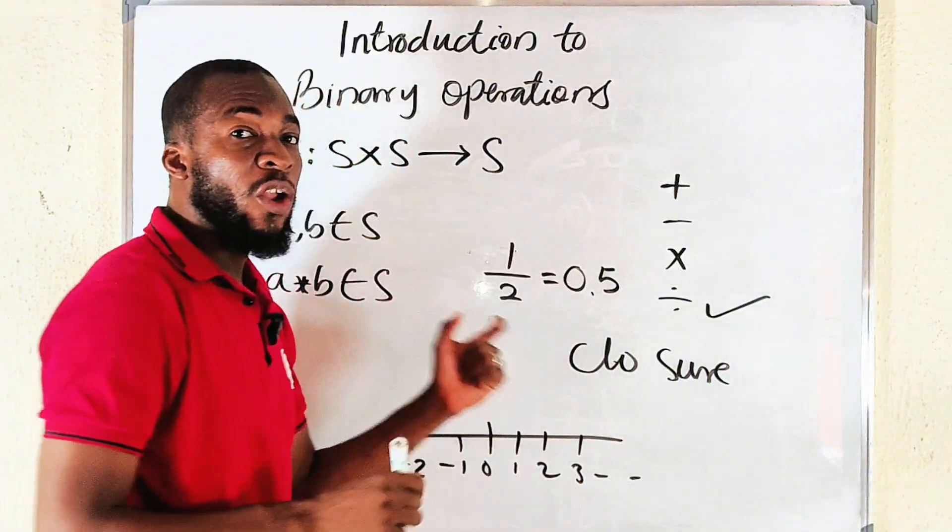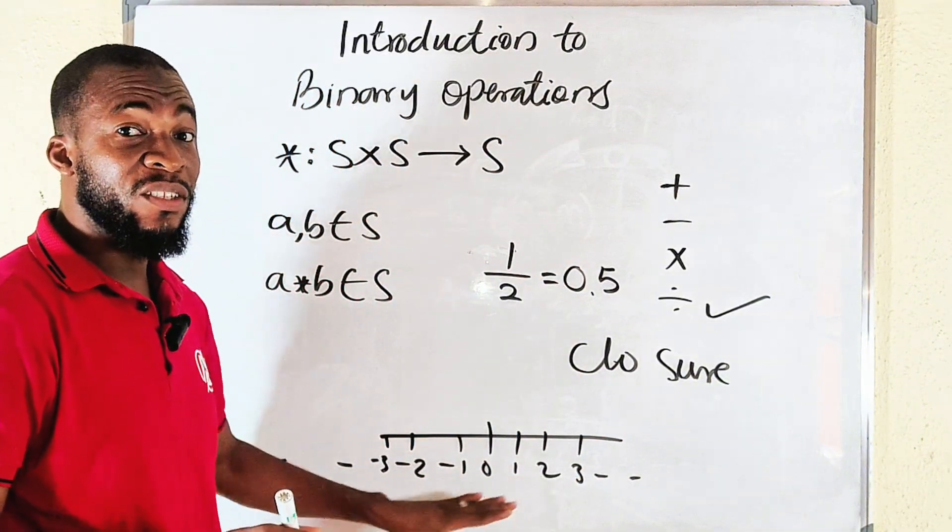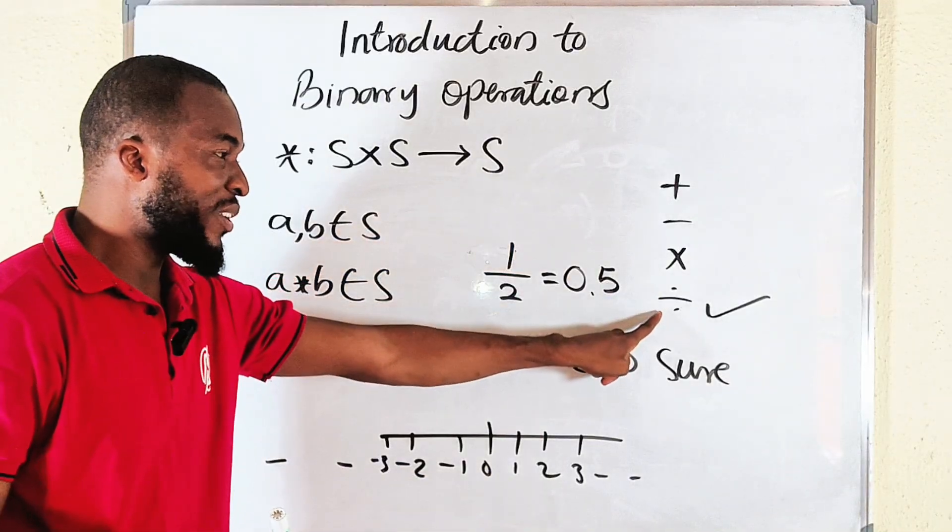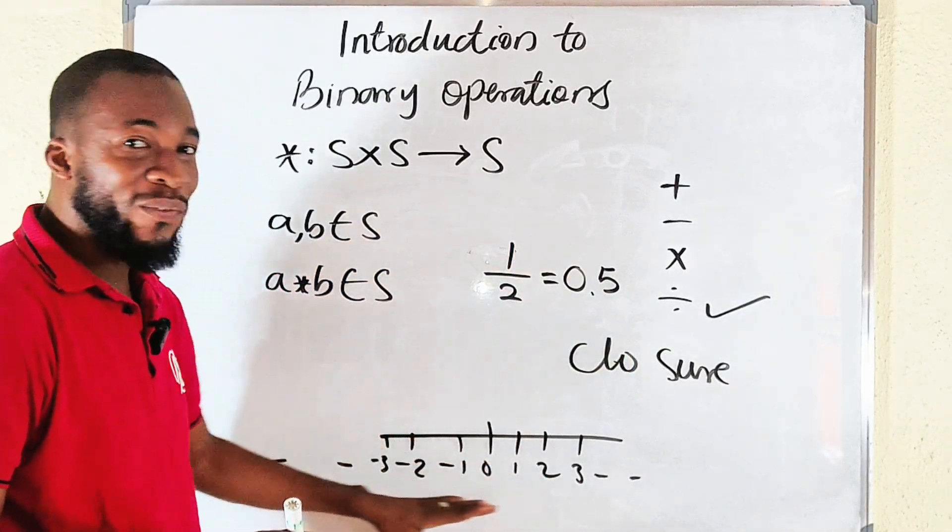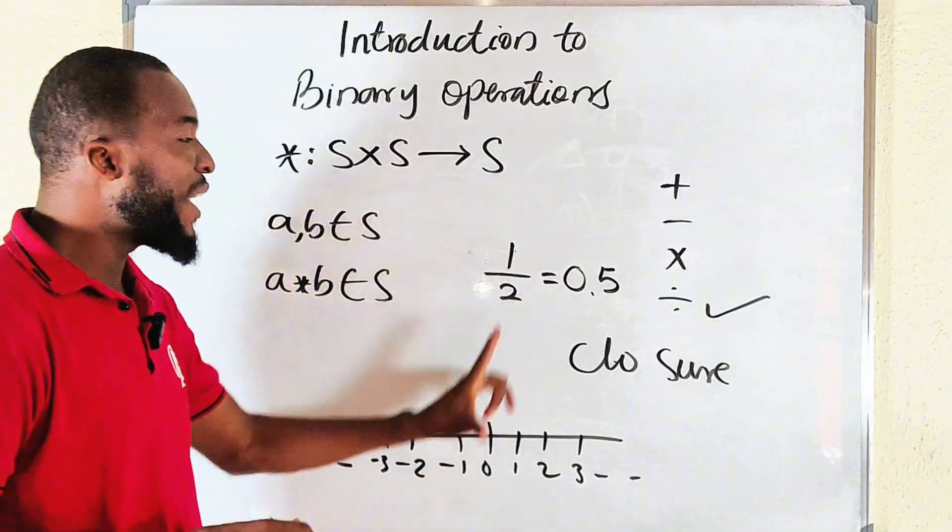And 0.5 is not an integer. Therefore, division is not close—we call it closure. Closure is not closed under integers. So the binary operation, which is division, is not closed under the set of integers.